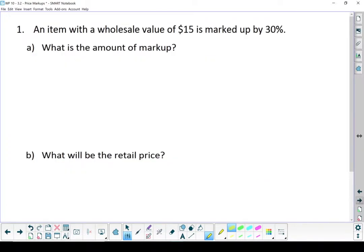Let's start with this one. So an item has a wholesale value of $15 and it's marked up by 30%. Essentially, a store buys the item for $15 and raises the price by 30%. That's its profit. It makes 30% on that sale. So what is the amount of markup? Well, let's start with our formula.